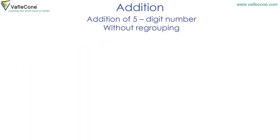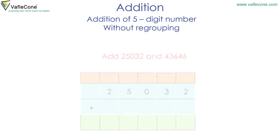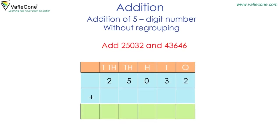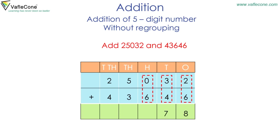Addition of five-digit numbers without regrouping. Add twenty-five thousand and thirty-two and forty-three thousand six hundred and forty-six. We start adding from the ones place. Two plus six is equal to eight. Moving on to the tens place: three plus four is equal to seven. At the hundreds place: zero plus six is equal to six. At the thousands place: five plus three is equal to eight. And at the ten-thousands place: two plus four is equal to six.